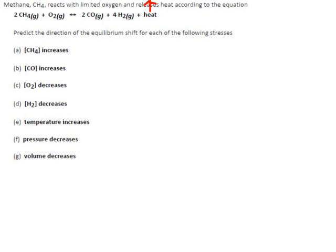If we add heat, the system will try to consume that heat, so it will use heat and hydrogen and carbon monoxide. It will make oxygen. It will make methane.